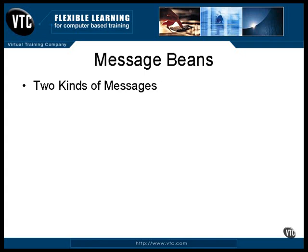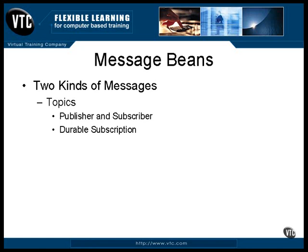There are two distinct flavors of messages: topics and queues. Topics have a publisher and a subscriber. The publisher is the process that creates and sends the message, and any subscriber listening to the topic can pick up the message and act on it. The message can go to any and all subscribers. A normal subscriber bean will miss many messages passed through the queue while the bean was busy doing something else. Any subscriber can have a durable subscription, and nothing will be missed — all the messages will be held in a queue for that subscriber. If you use the topic model, a durable subscription is probably the most useful form.